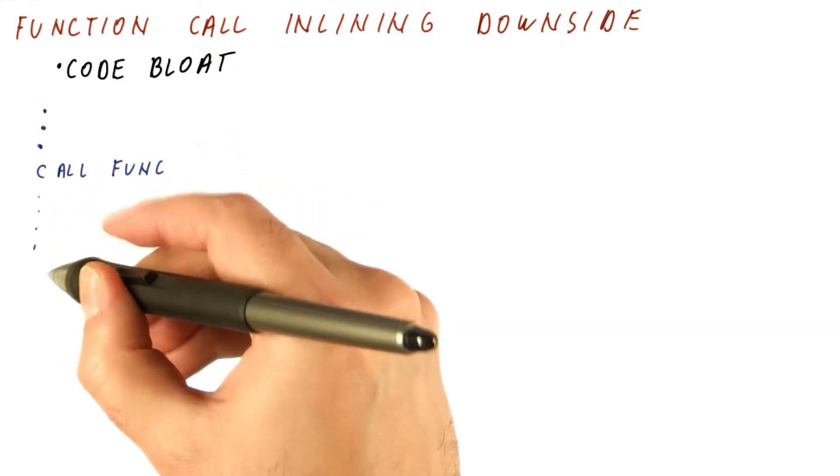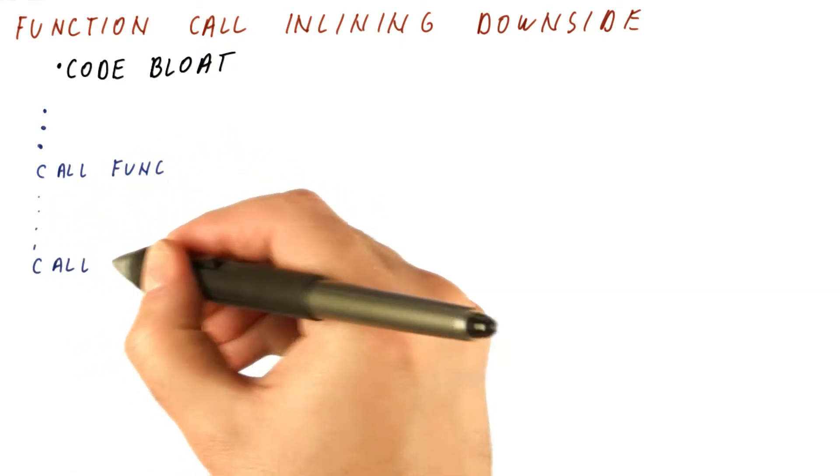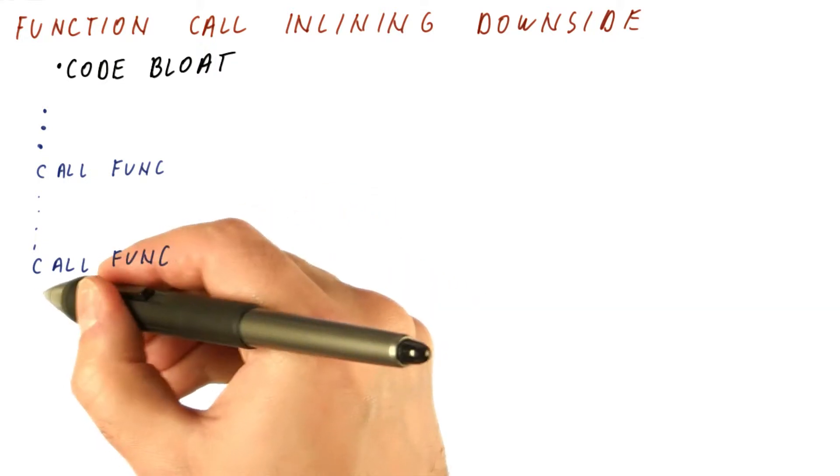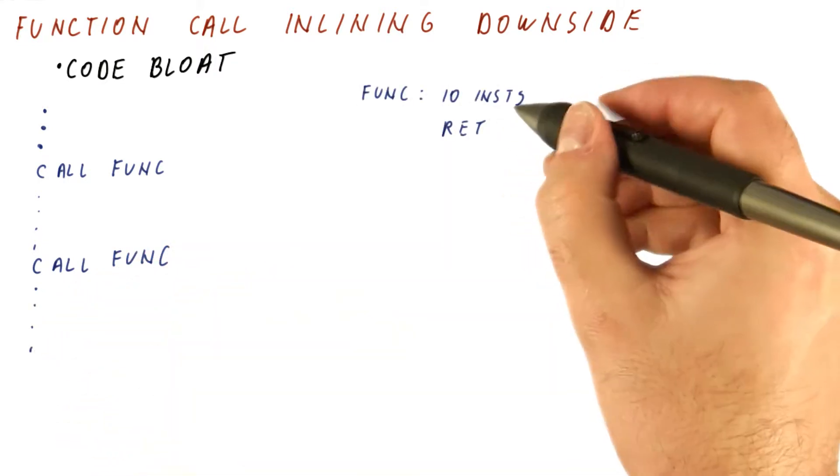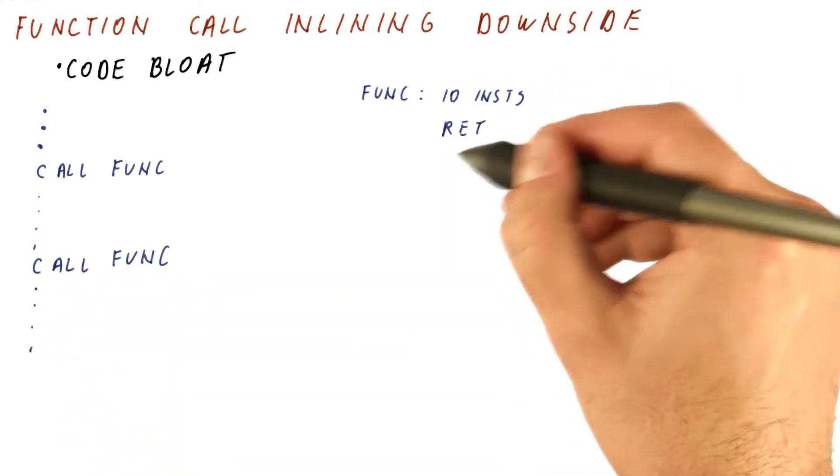Suppose we have the original program, and it calls the function, and then it continues and calls the same function from another place and so on. Let's say that our function is 10 instructions and then a return.